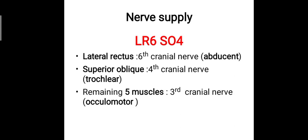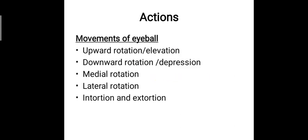Muscles are for movements. The movements of the eyeball include upward rotation (elevation), downward rotation (depression), medial rotation towards the nasal side, lateral rotation away from the medial side, and intorsion and extorsion. These are the actions of the eyeball facilitated by these muscles.